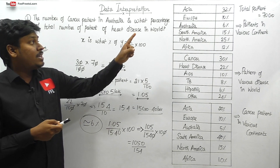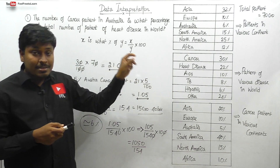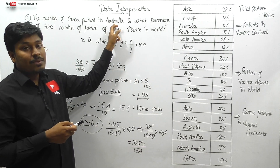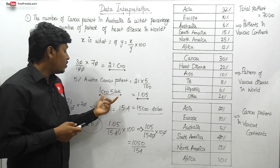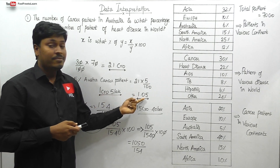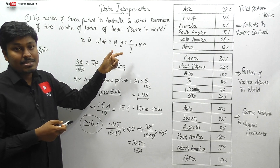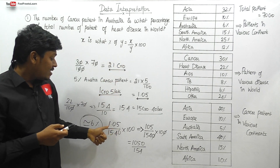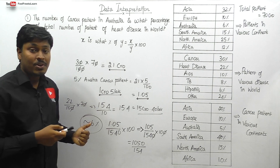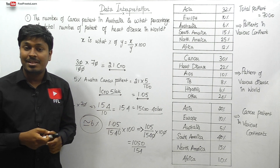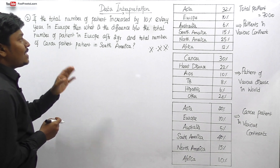To summarize question one: out of 70 crores, 30% are cancer patients, and out of those, 5% are in Australia, giving us 1 crore 5 lakh as the numerator. The odd disease patients in the world are 15 crore 40 lakh as the denominator. After cancellation, the final answer is 6%.